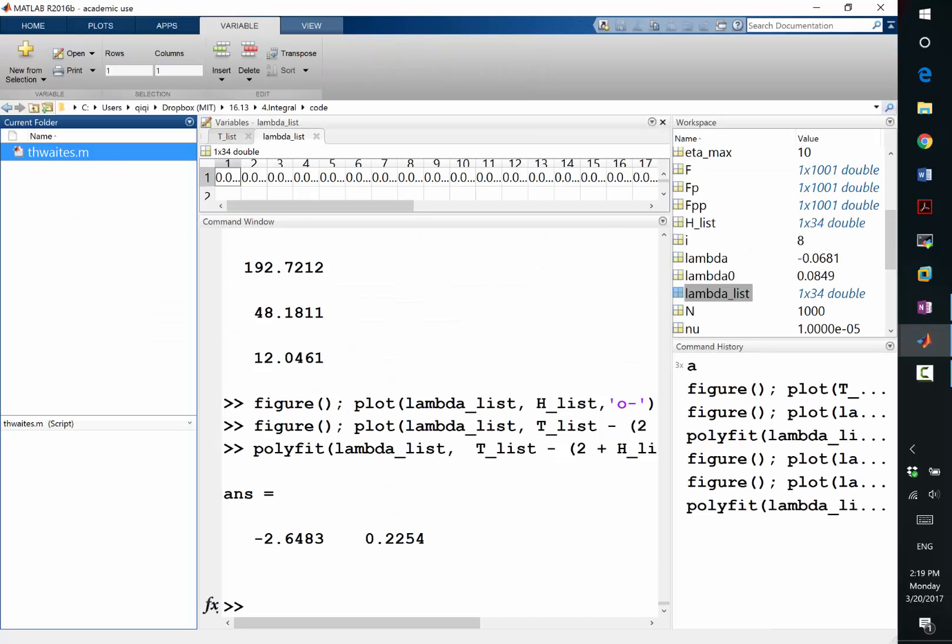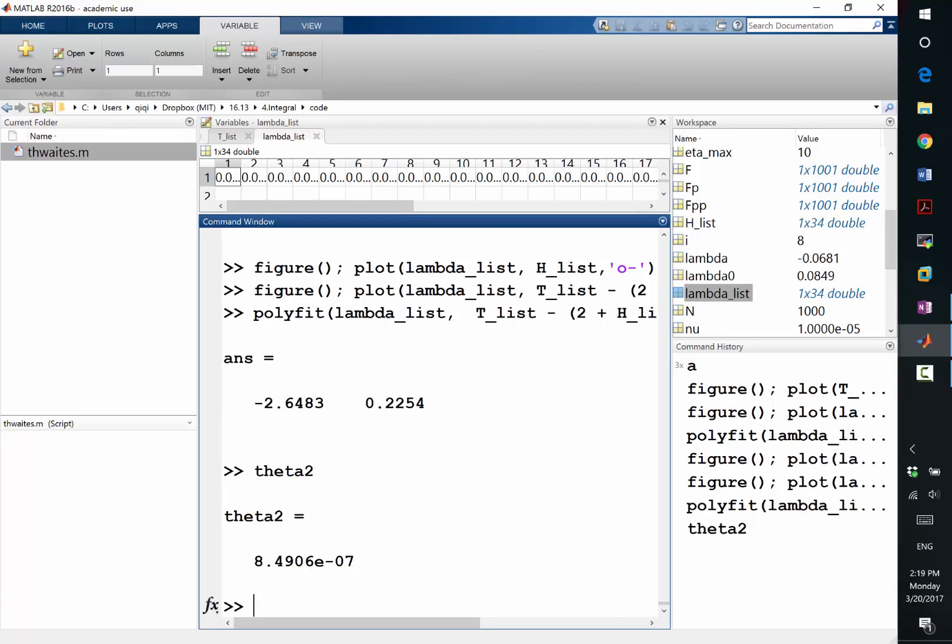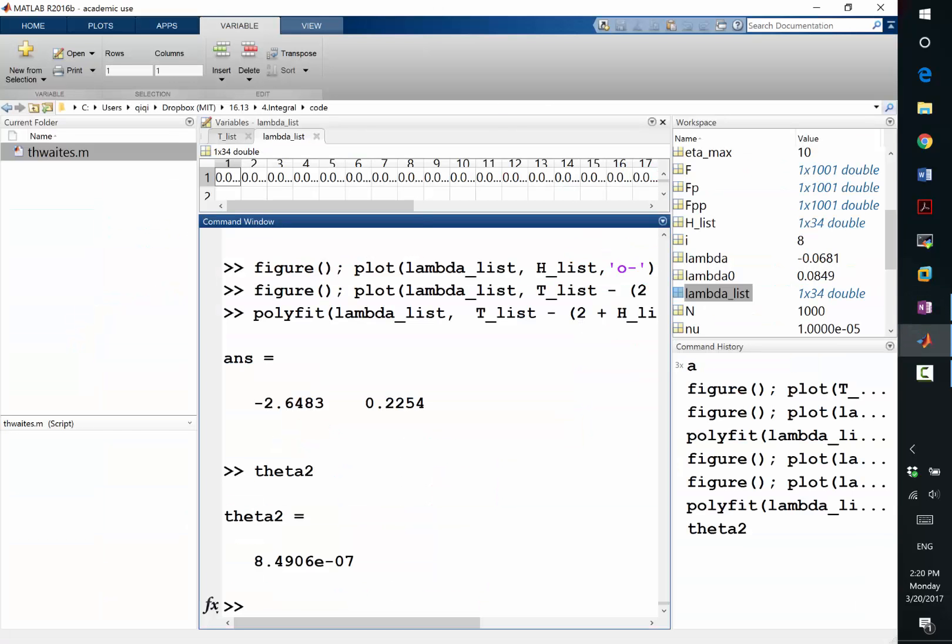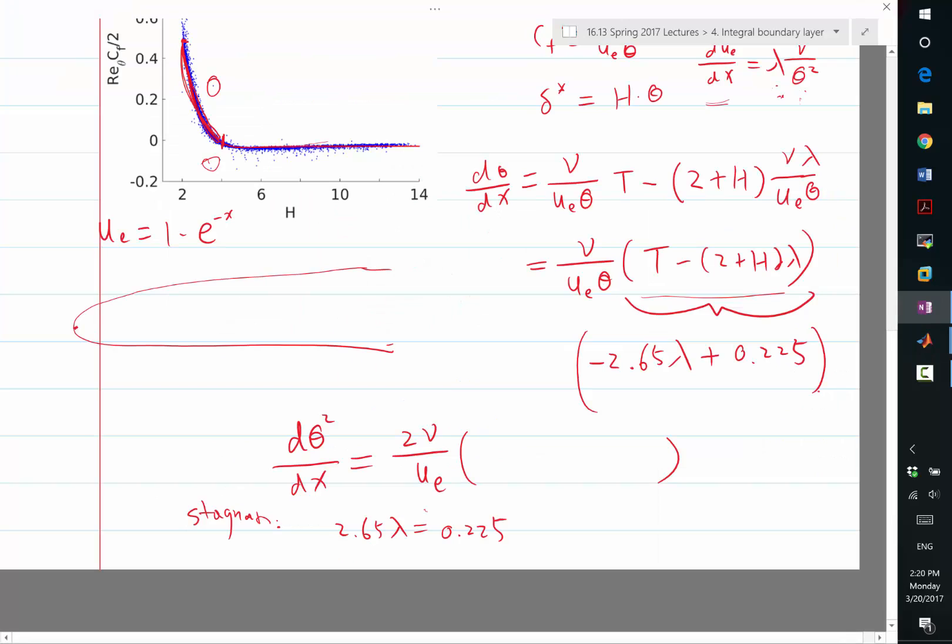So if we run that, I have a theta 2 at the leading edge. So this is presumably a kind of semi-elliptical shape that corresponds to ue equal to 1 times e to the minus x. So at the leading edge, the boundary layer thickness is like 10 to the minus 6 meters. So here now we are in the dimensional world because we have a nu. Very thin boundary layers to start with at the leading edge.